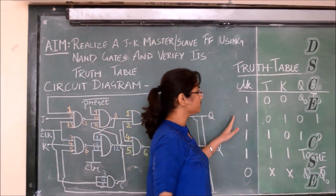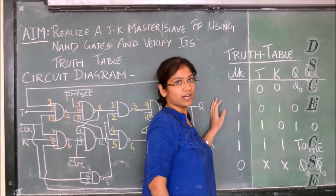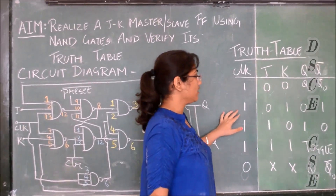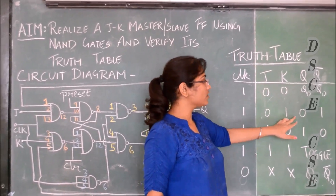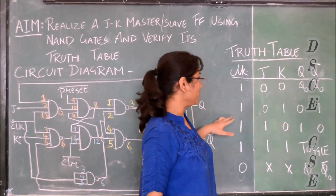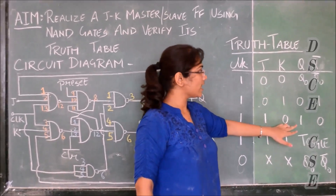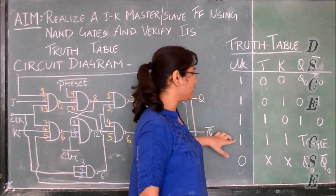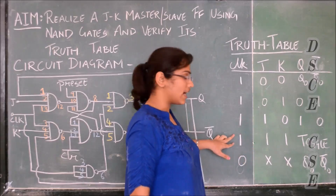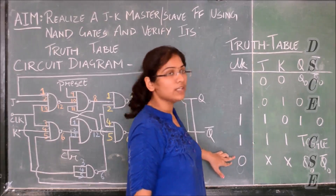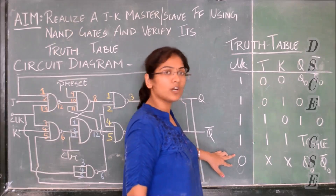Now we see the truth table. When the value of clock is 1 and the value of J and K is low, then there is no change in the output. When the value of clock is 1, J is low and K is high, we get the reset condition — Q is 0 and Q-bar is 1. When the value of clock is 1 and J and K both are 1, we get the toggling condition — the output keeps changing. When the value of clock is 0, there is no change in the output and a negative clock is provided to the master part.